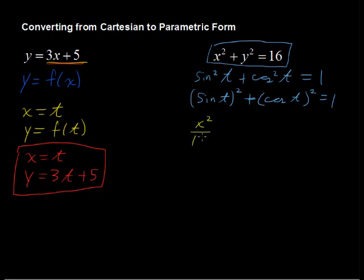So x squared over 16 plus y squared over 16 equals 1. It's getting closer. We've got something squared plus something squared equals 1, but it's not quite something squared. It's just the numerator squared.